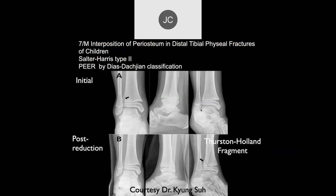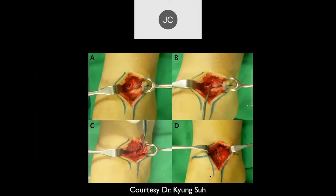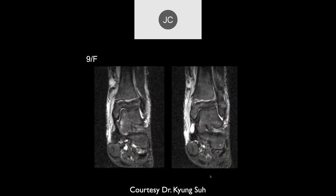In a young person this might have been managed conservatively; at 55 years old it would have been more conservative as well, since most pediatric cases wouldn't be operated on either. The MRI scan shows the complicated fracture.